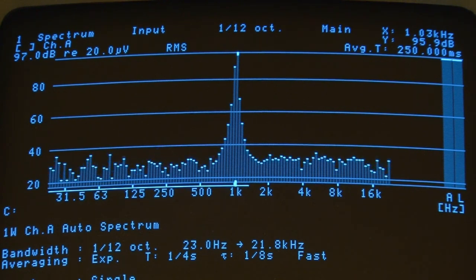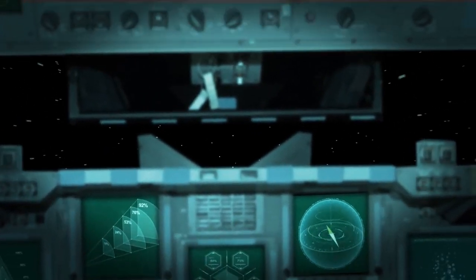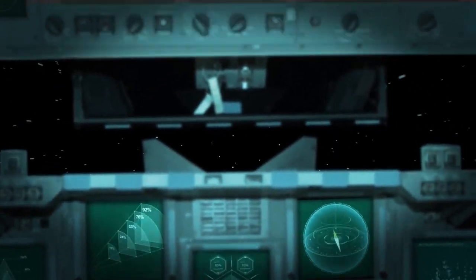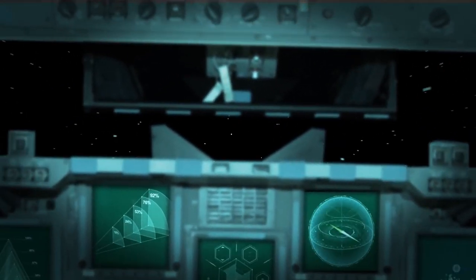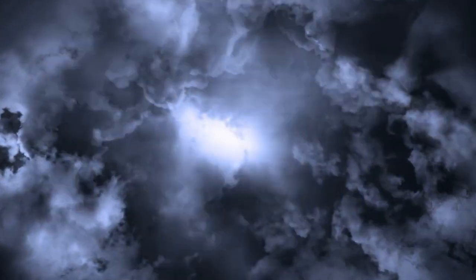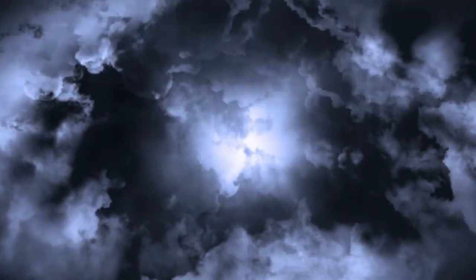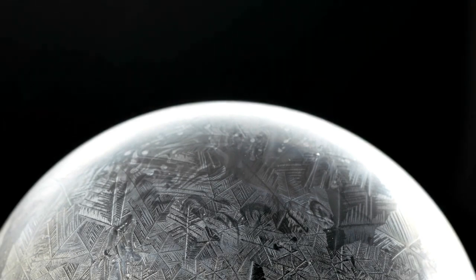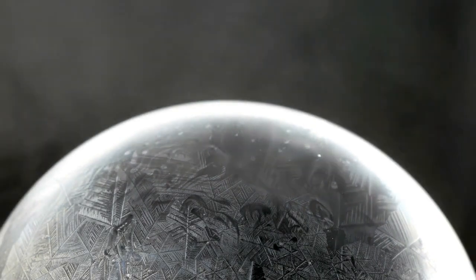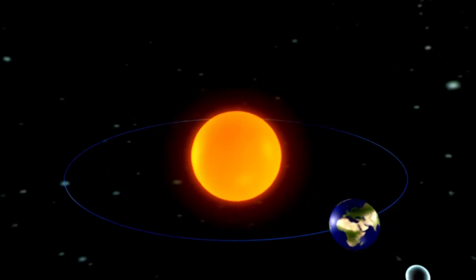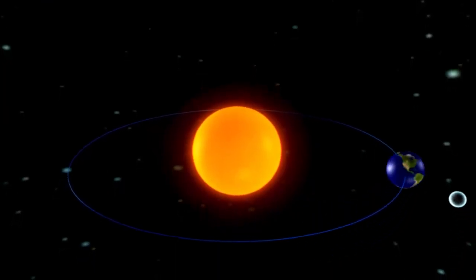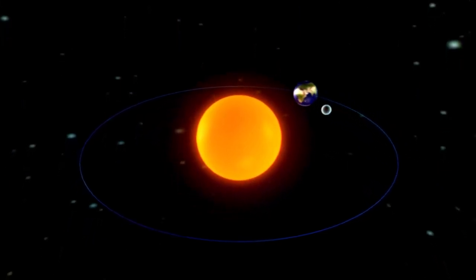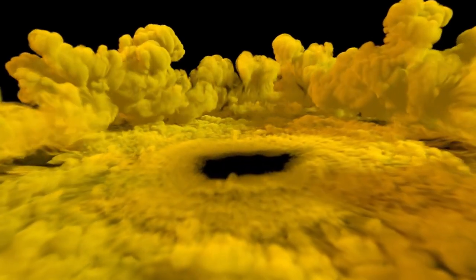Beyond our own solar system lies the enigmatic Oort cloud, a vast and mysterious region composed of trillions of icy comet-like objects that form a spherical shell around the sun. This cloud, held together by the sun's distant gravitational pull, extends nearly halfway to the next closest star system. Scientists believe the Oort cloud is a remnant from the early formation of our solar system, a frozen archive preserving material from billions of years ago. Despite its enormous size, no direct observations have ever been made, and its existence is inferred based on the behavior of long-period comets that originate from this distant region.